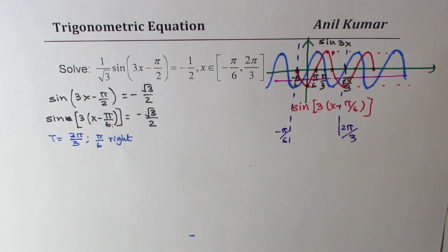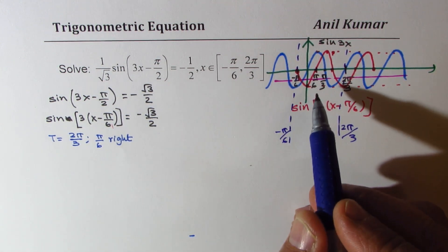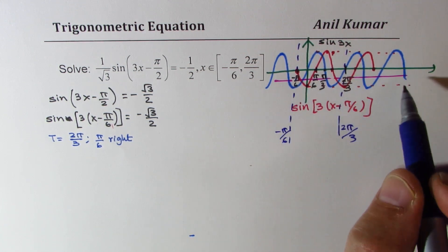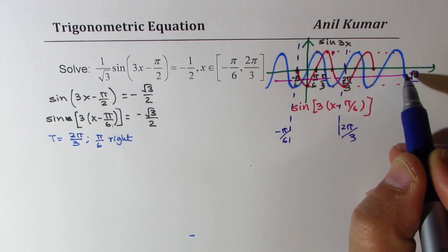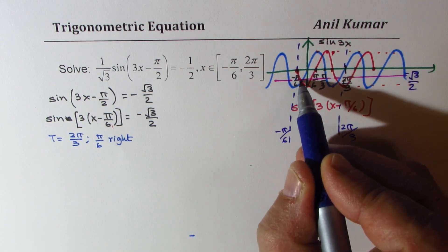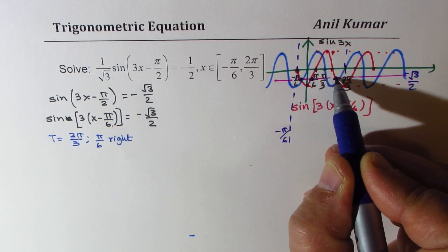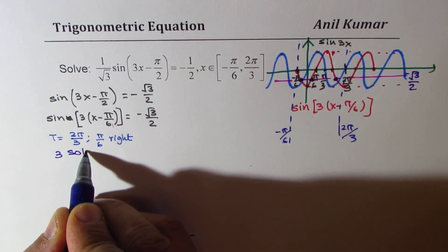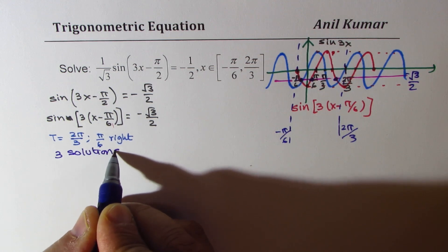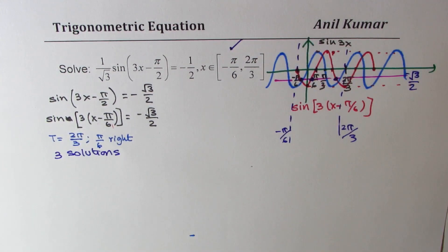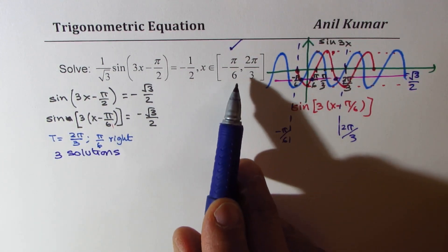I am sketching all this to make you understand what we should expect as our solution. The red curve is the final curve. This line represents minus square root 3 over 2. The points of intersection within this given interval are these three. So we expect three solutions.